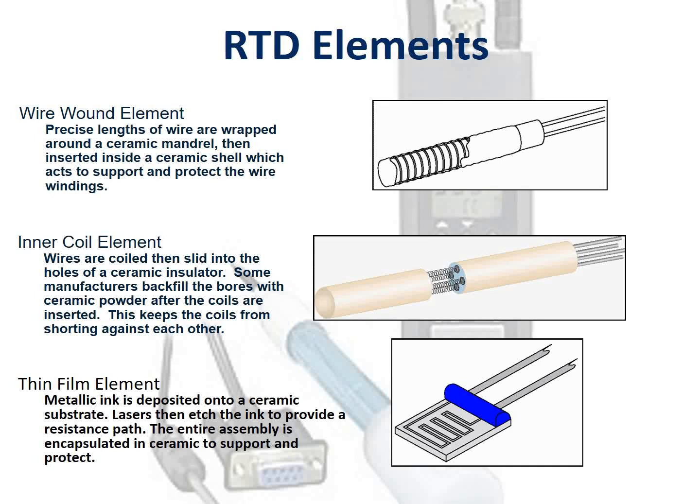There are three types of RTD constructions. In the wire wound element RTD, precise lengths of wire are wrapped around a ceramic mandrel, then inserted inside a ceramic shell which acts to support and protect the wire windings.